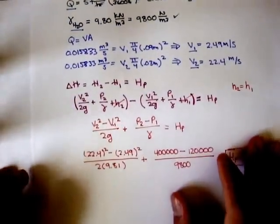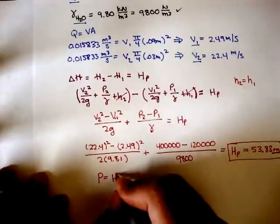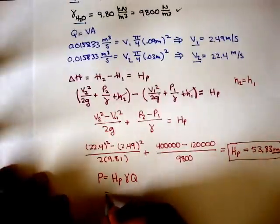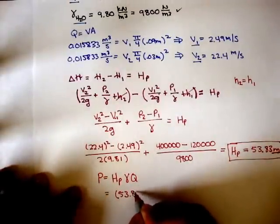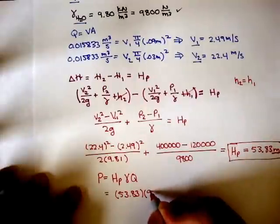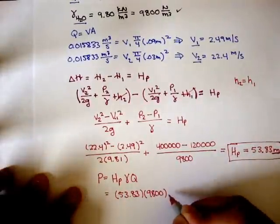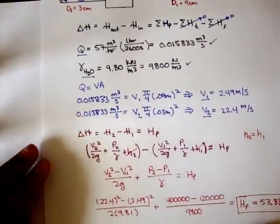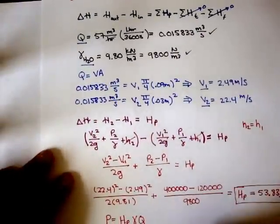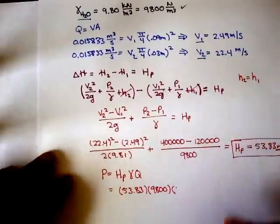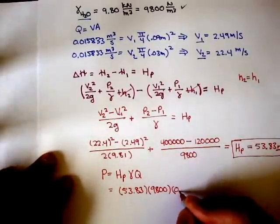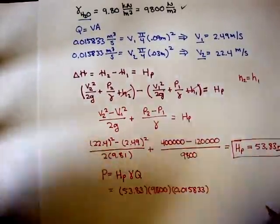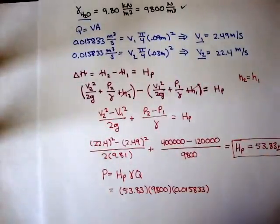So let's find the power. We just plug it in using this formula: P equals gamma Q Hp. That's equal to 53.83 times 9,800 times Q, which we found to be 0.015833.